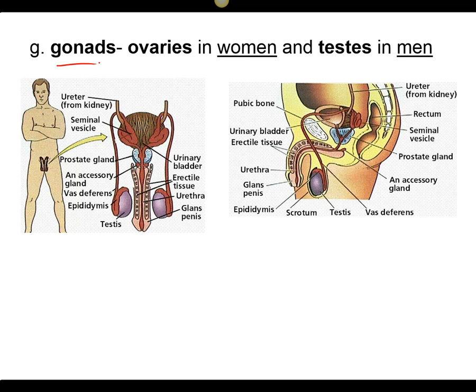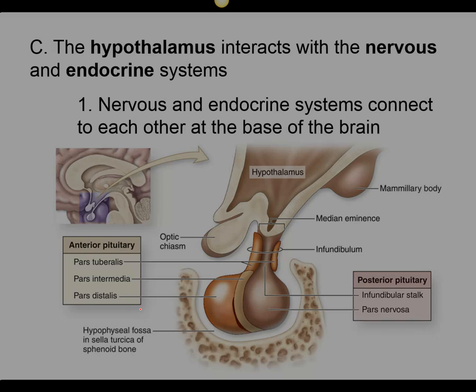Our gonads — the testes and ovaries — produce testosterone in males and estrogen in females, which help regulate the reproductive system and secondary sexual characteristics.